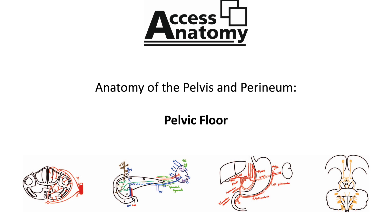The pelvis is bounded posteriorly, laterally, and anteriorly. Posteriorly there is the sacrum and coccyx. The lateral walls of the pelvic cavity are formed mainly by piriformis, the obturator foramen and its overlying membrane, the obturator membrane, and the obturator internus muscle. Lying medial to obturator internus muscle is the obturator fascia, and this has a thickened tendinous arch that extends from the pubic body to the ischial spine.